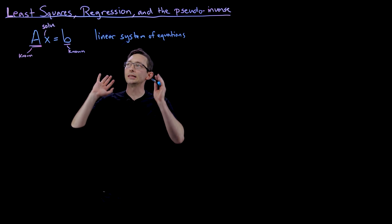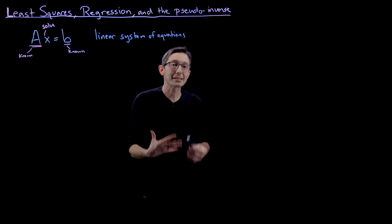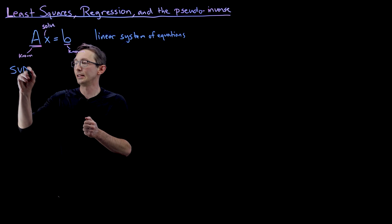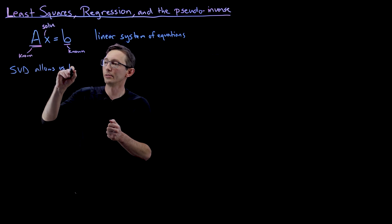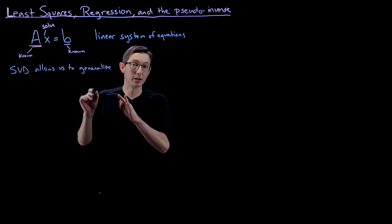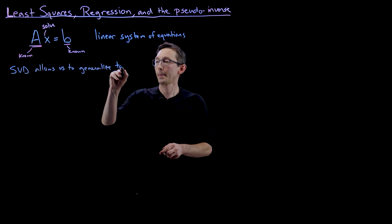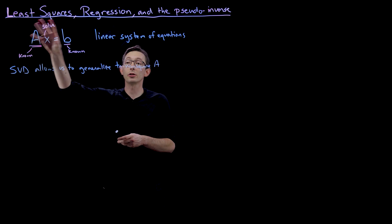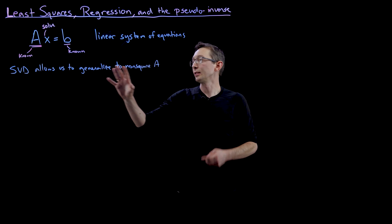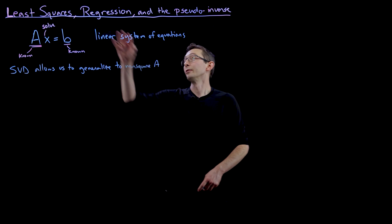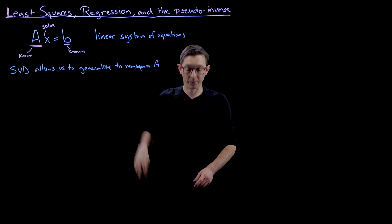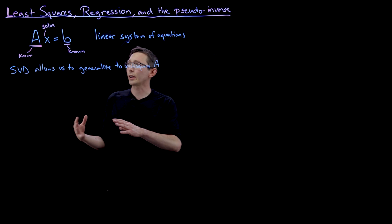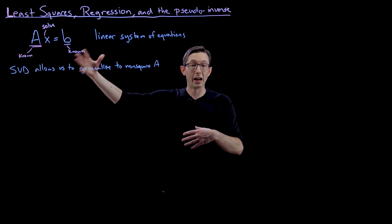The singular value decomposition allows us to massively generalize this for non-square A matrices. SVD allows us to generalize the solution to non-square A matrices, and this is huge. This opens up a much larger class of linear systems, especially those that arise in data analysis and data modeling, for example in a linear least squares regression.